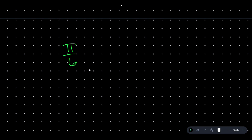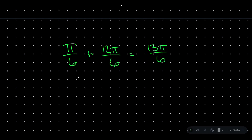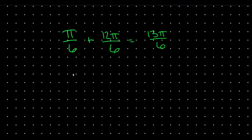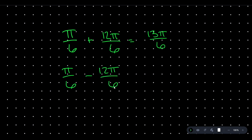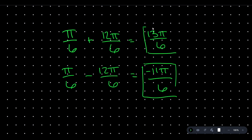Let's say we are at π/6 and we want a coterminal value. We're going to add 2π, since a full revolution of our circle is 2π. Let's find a common denominator and change 2π to 12π/6. Adding them together gives us 13π/6. So 13π/6 and π/6 are coterminal. Let's also subtract to find a negative value: π/6 minus 12π/6 gives us negative 11π/6. So all three values — π/6, 13π/6, and −11π/6 — are coterminal.